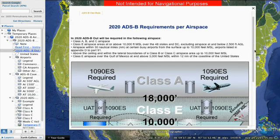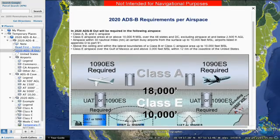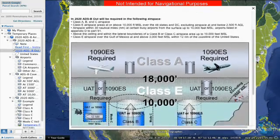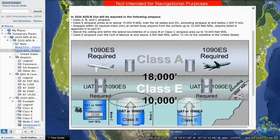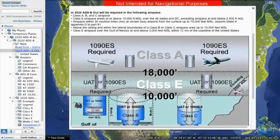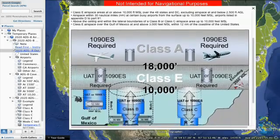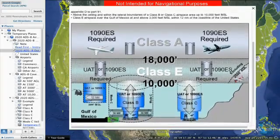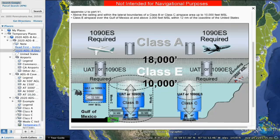All aircraft flying above 10,000 feet mean sea level must be equipped and transmitting with ADS-B out. Those of you who fly in the mountains should know that this particular ADS-B requirement is excluded if you are at or below 2,500 feet above ground level.